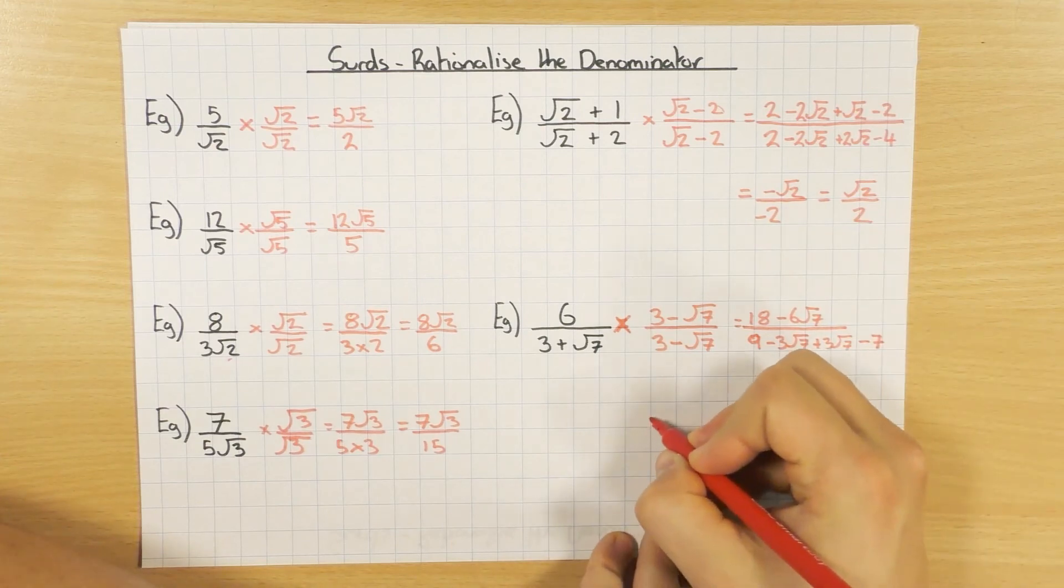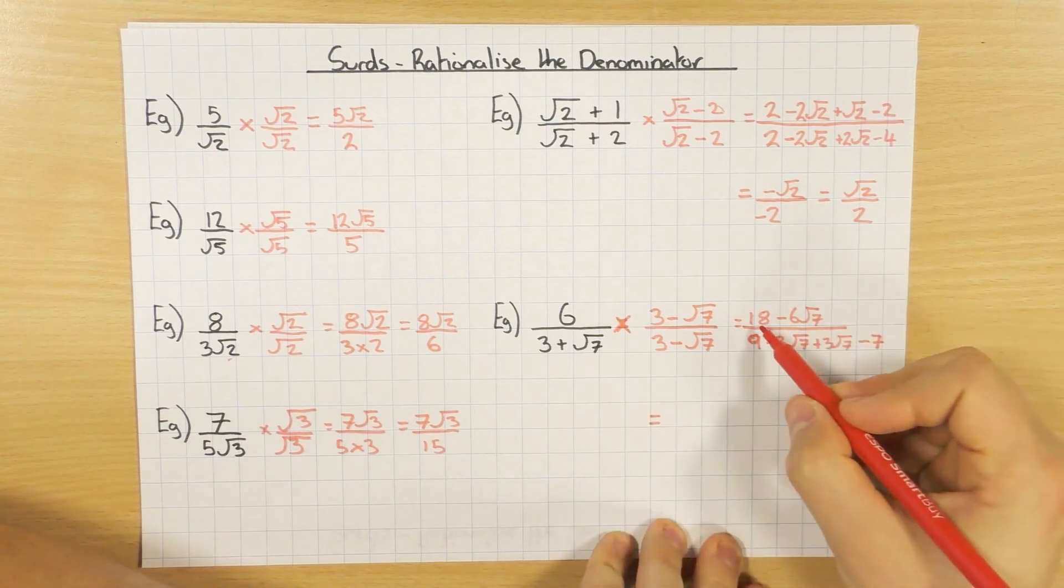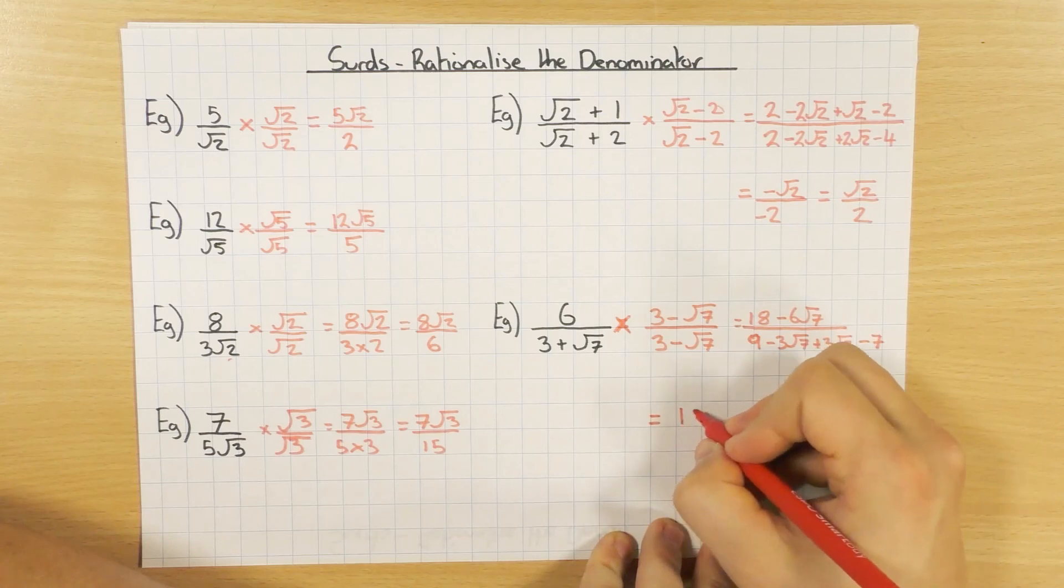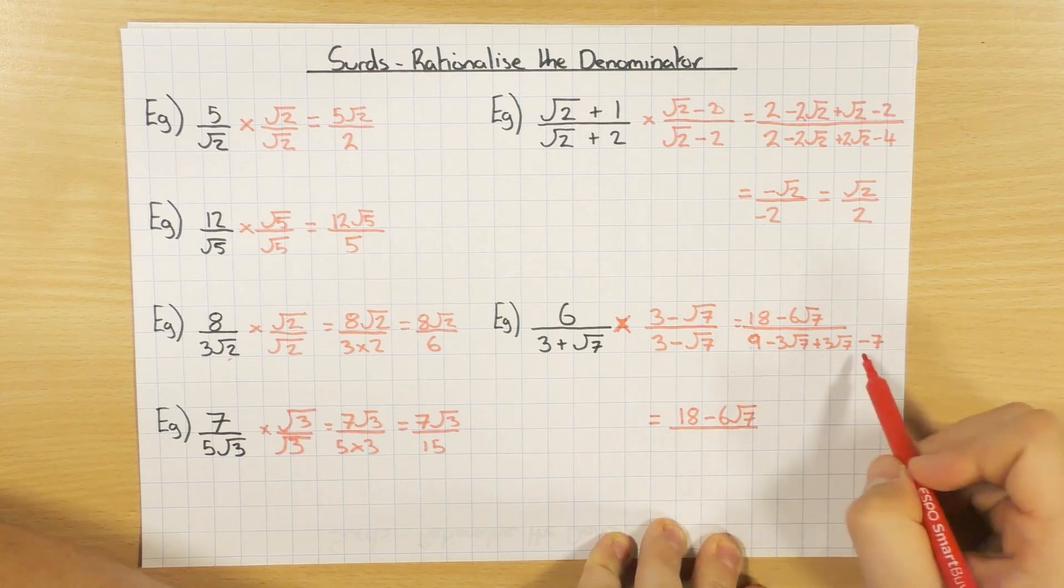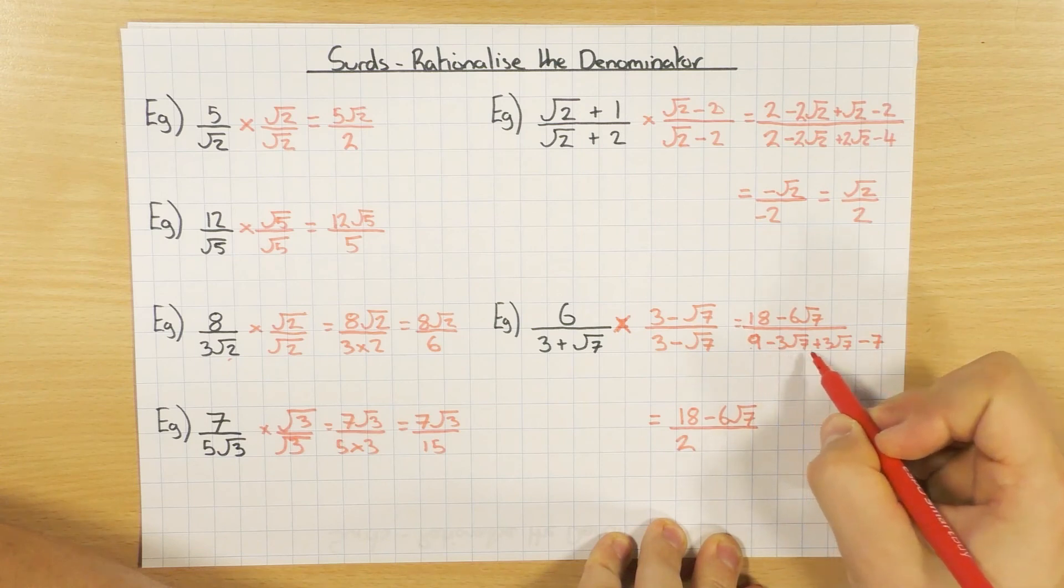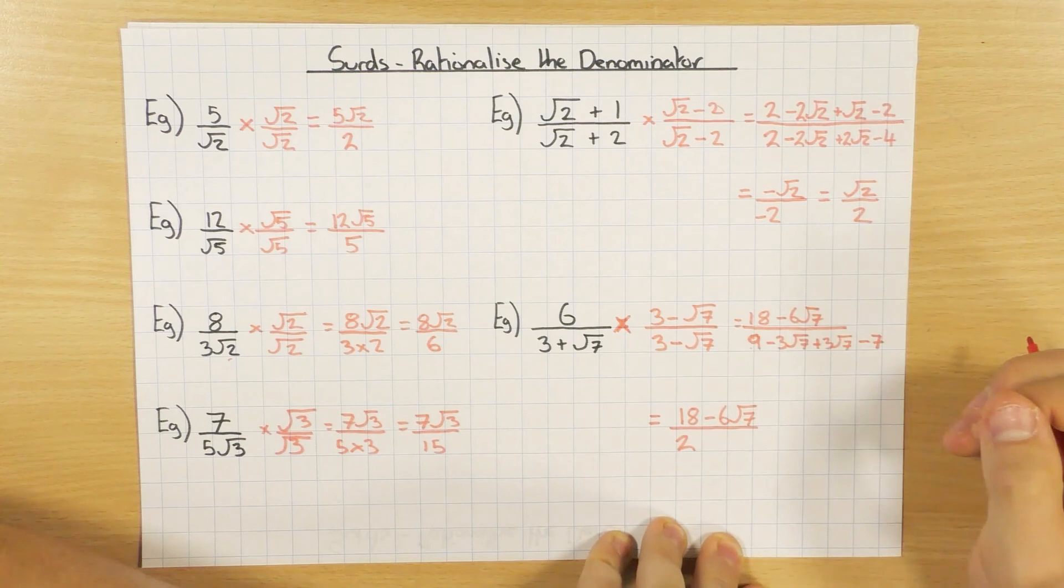A little bit of tidying up. I'm just going to come over here so I've got a bit of room. Obviously that's fine at top, I can't simplify anything there. But on the bottom, I've got 9 take away 7, which is 2. And then, just as we expected, minus 3 root 7 plus 3 root 7, they're going to cancel out. Happy days, there's no more surds on the bottom.